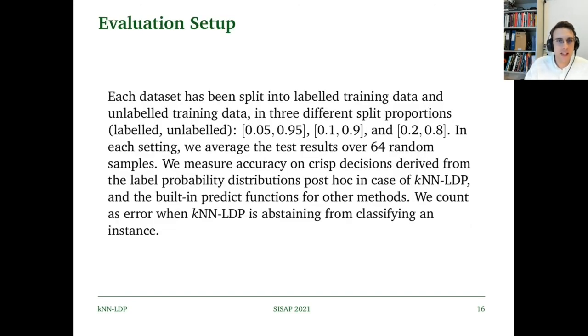In our evaluation setup, we split the datasets into sets of 5%, 10%, and 20% labeled data. The rest is unlabeled. In each setting, we average the test results over 64 random samples. I should also add that we used Euclidean distance throughout the tests. We measure the accuracy on the crisp decisions derived from the label probability distributions, and remember, we count as error every time KNN-LDP is abstaining.